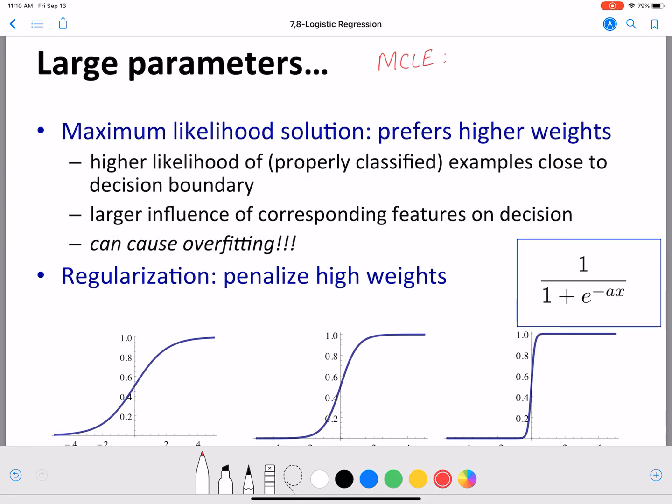This is p of y_l given x_l, where l indexes the examples. So we use p of y_l given x_l, which is the conditional log likelihood. The procedure that we use is called maximum conditional log likelihood estimation, or also known as MCLE. This MCLE solution generally prefers higher weights.